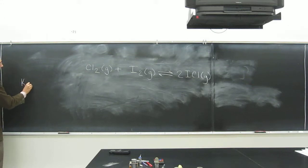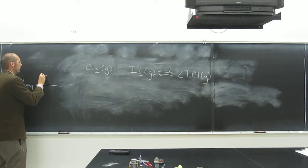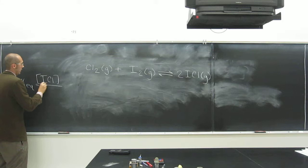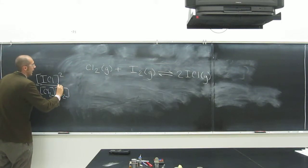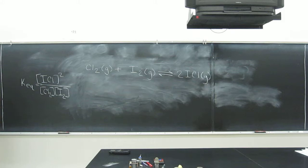What is it? K_eq equals ICl squared divided by Cl2 times I2, right? They're all gases, so they're all in the equilibrium expression, okay?